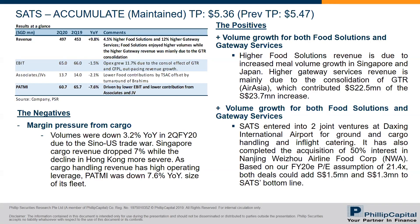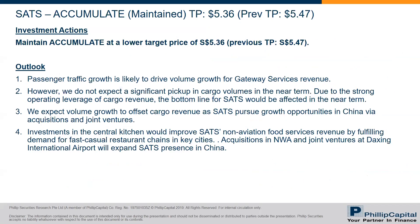The negative is that cargo volumes are still down due to the trade war. Singapore cargo revenue is down more than 7%, while the decline in Hong Kong is even more. PATMI was down 7.6% year-on-year, mainly because of lower cargo volume, which has high operating leverage. We maintain accumulate at a lower target price of $5.30. We think passenger traffic growth will drive volumes for gateway services, but do not expect a significant pickup in cargo volumes in the near term.